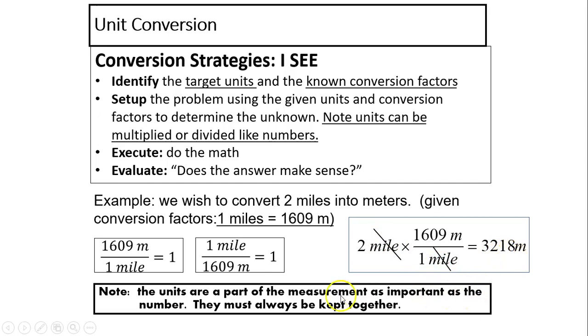So two miles times 1609 meters divided by one mile cancels out. You'll have 3,218 meters. Note, the units are part of measurement as important as the number. They must always be kept together.